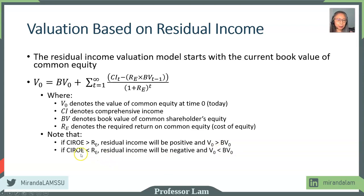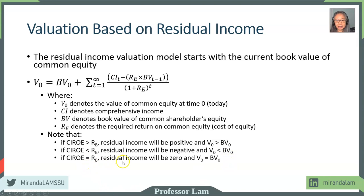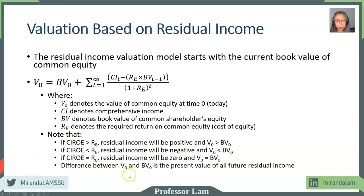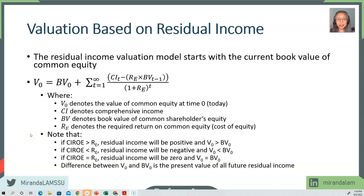Conversely, if the required return is greater than what the firm can generate, residual income will be negative and the value of the firm will be less than book value. If this is sufficiently true, you would expect a merger or acquisition — a firm selling well below its book value will likely attract corporate takeovers. If they are equal, residual income is zero and the value exactly equals book value today. The difference between value and book value is the present value of all future residual income.